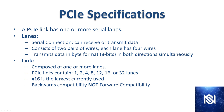A PCIe link can contain one, two, four, eight, twelve, sixteen, or thirty-two lanes. x16 is the largest that's widely used right now. Obviously, to keep getting faster you would need to add more lanes, so we'd expect to move toward x32 in the near future. The 'x' notation is the common way to denote how many lanes a PCIe connection has.